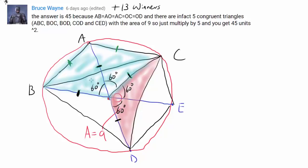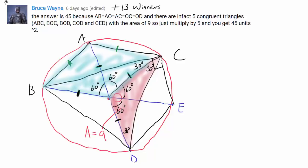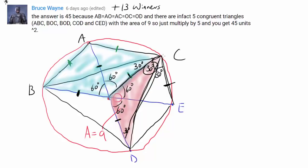We have proven that BOC and COD are congruent. We know triangle OCD is isosceles, so this angle is 30 degrees and this angle is 30 degrees. Similarly, this angle is 30 degrees. Realize that the angle subtending a semicircle is 90 degrees, so we know this angle is 90 degrees. That tells us angle ECD is 30 degrees, and triangle OCE is equilateral because we have 60 degrees and 60 degrees, telling us CE equals the radius of the circle.